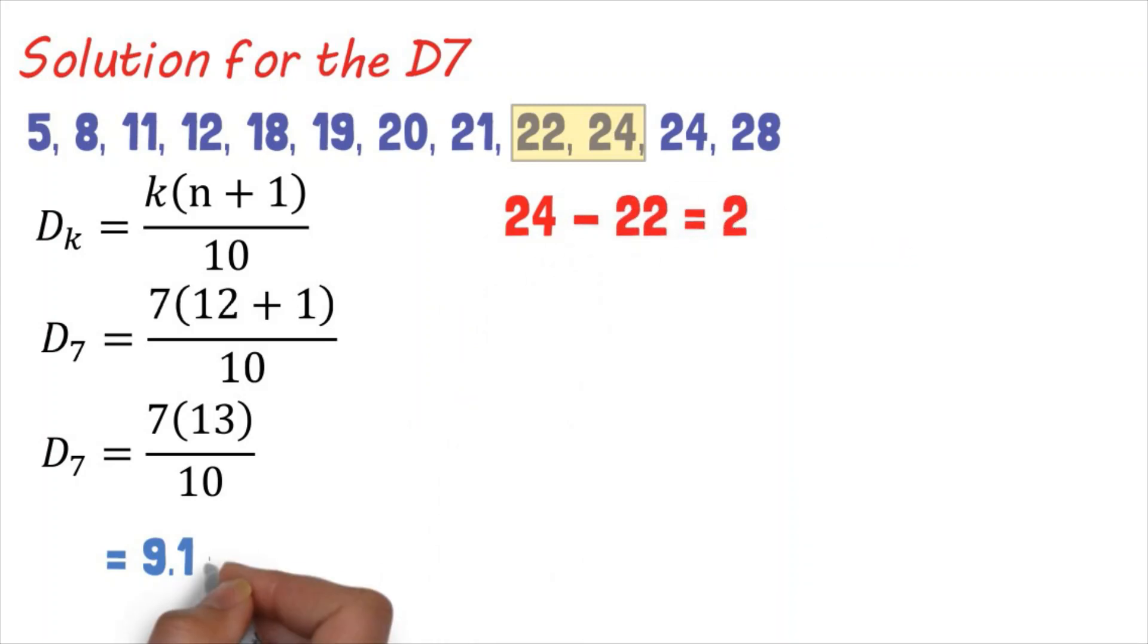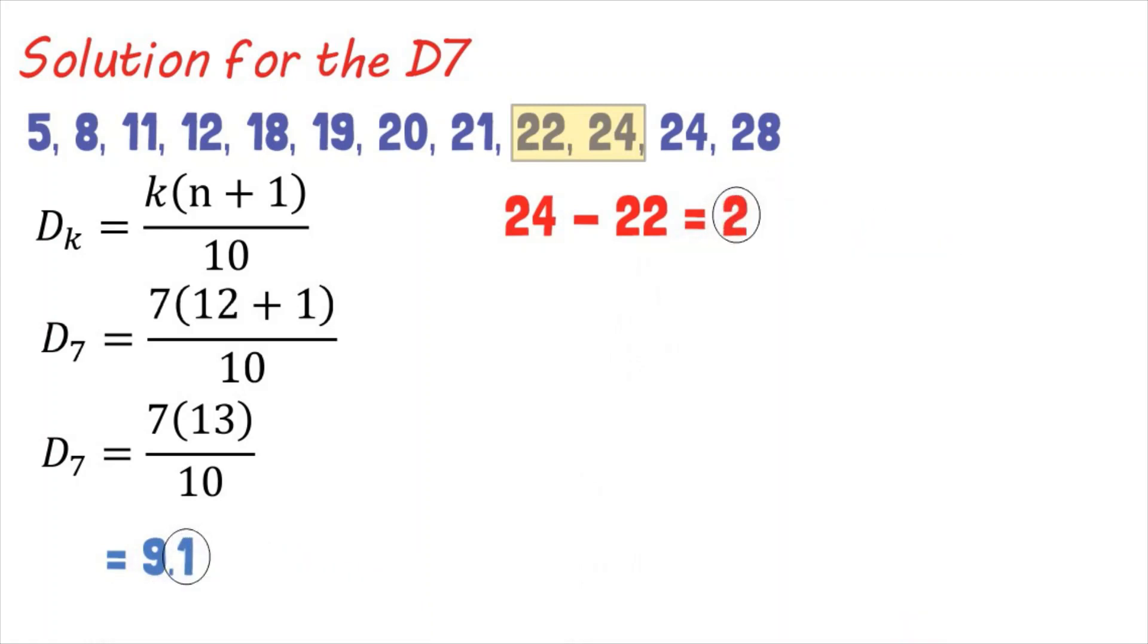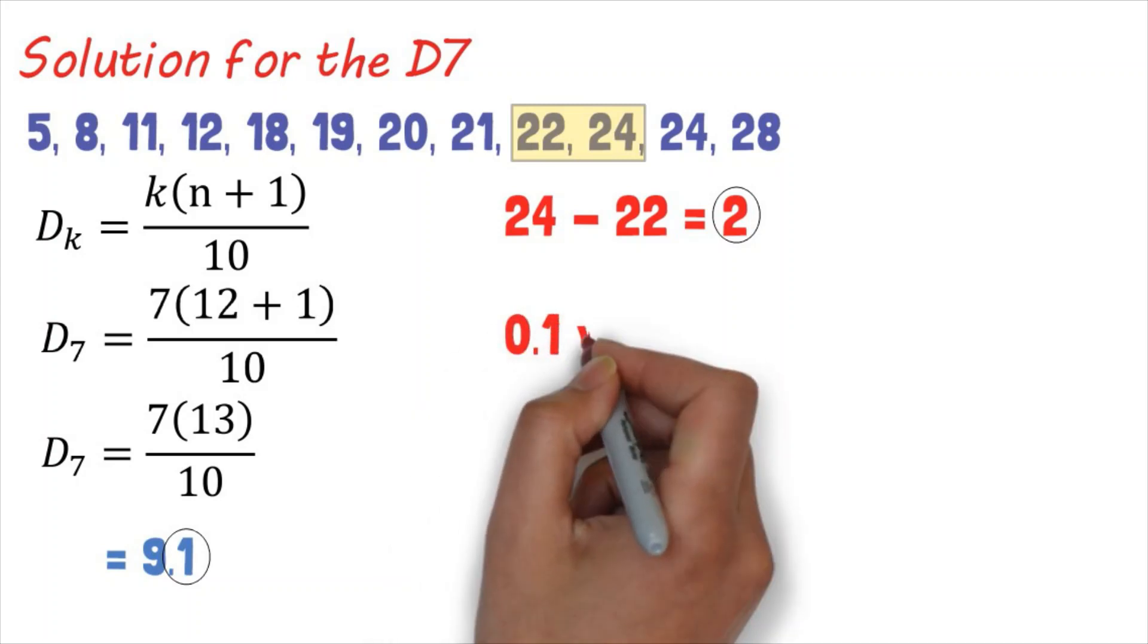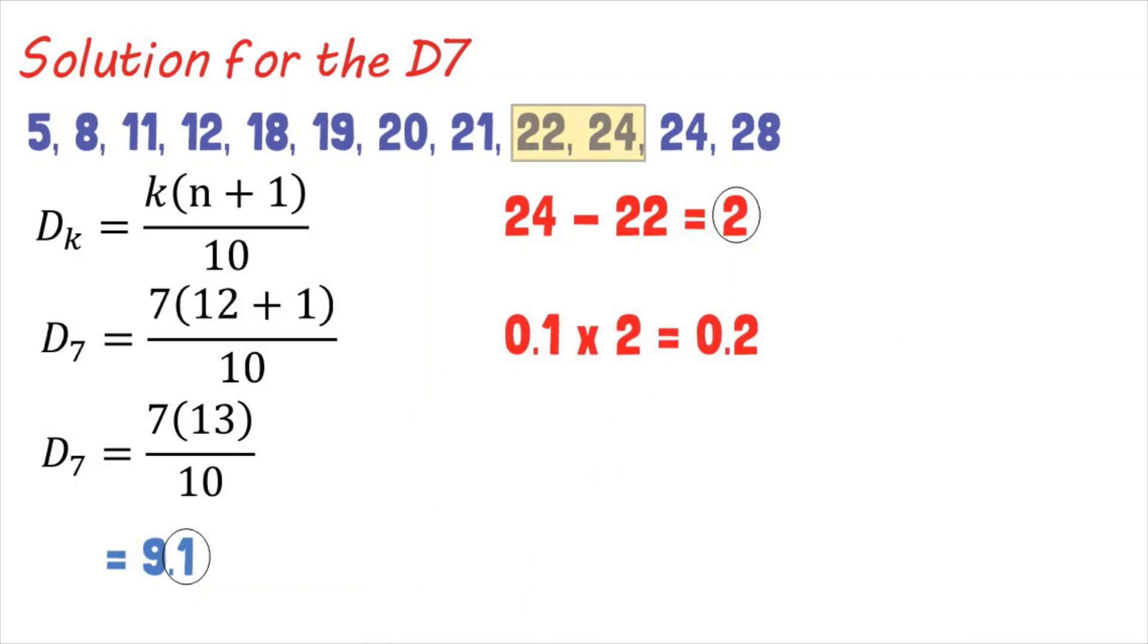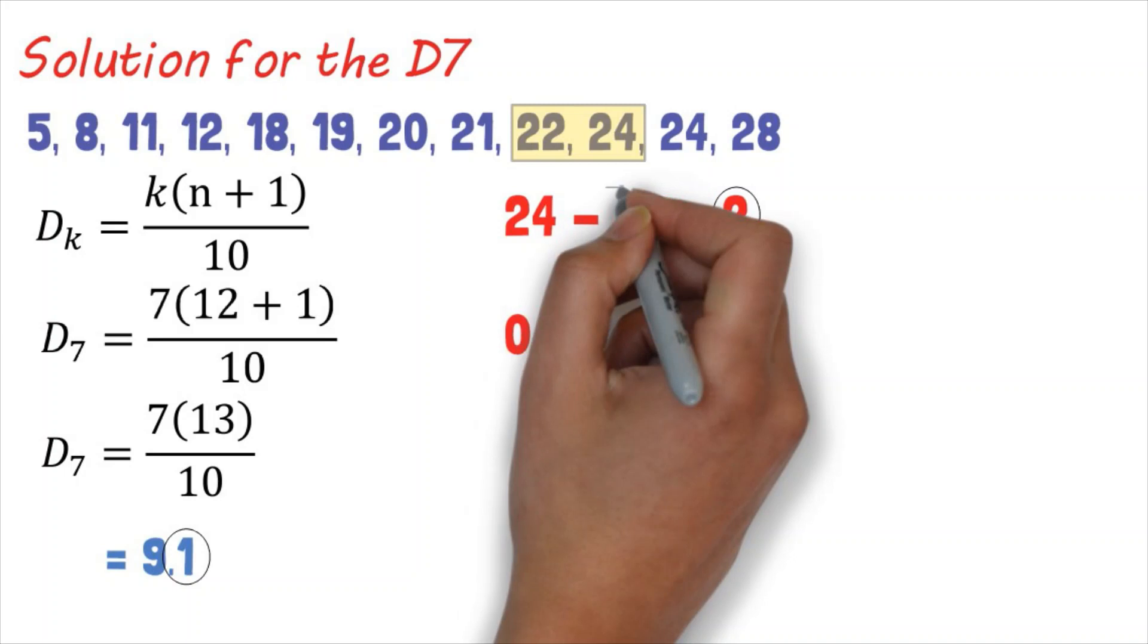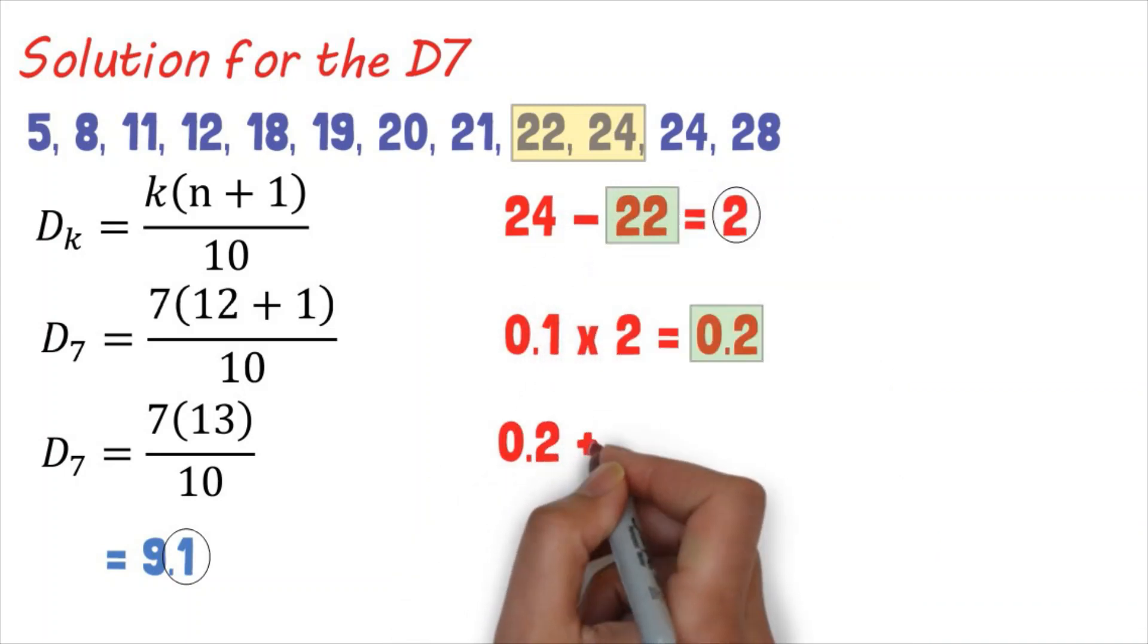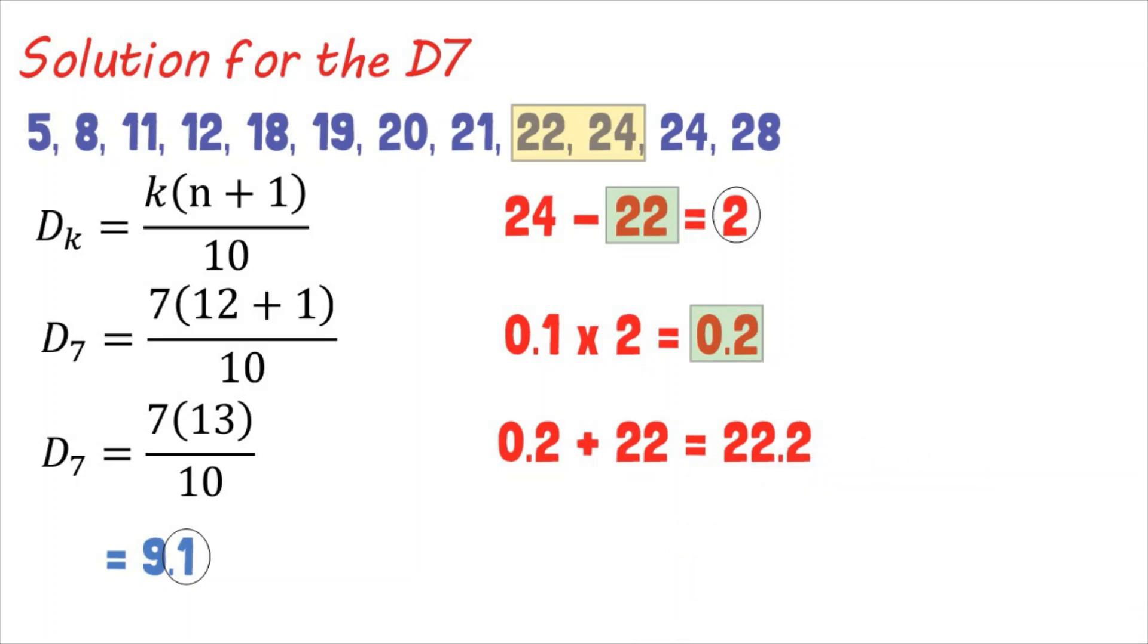The next step is to get the decimal part from step 2 and multiply it with the result of step 3. So that is 0.1 times 2 which equals 0.2. And lastly, we add the result from step 4 to the smallest number in step 3. So that is 0.2 plus 22 that gives us 22.2. That means our D sub 7 equals 22.2.